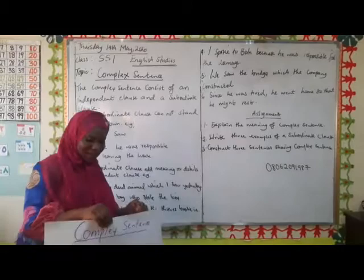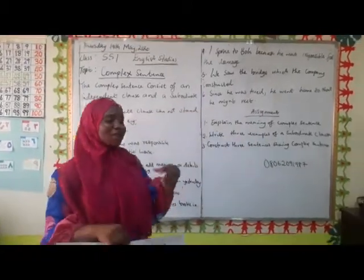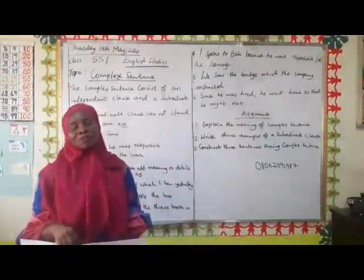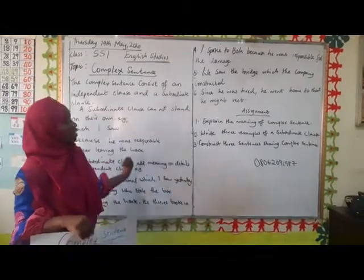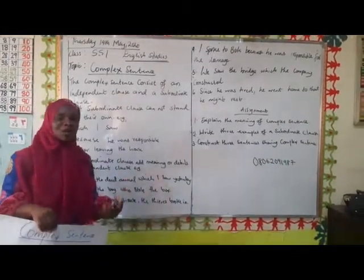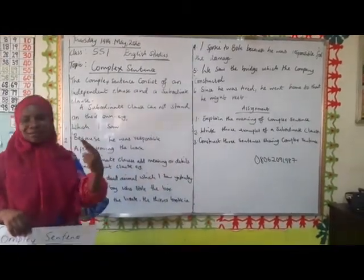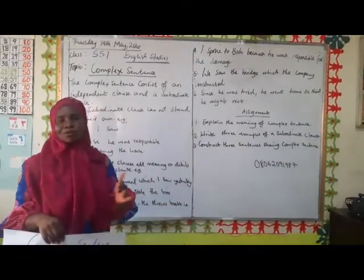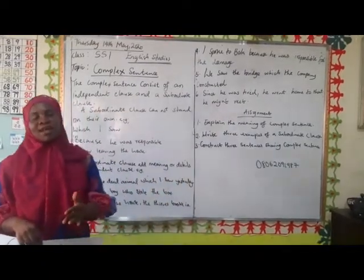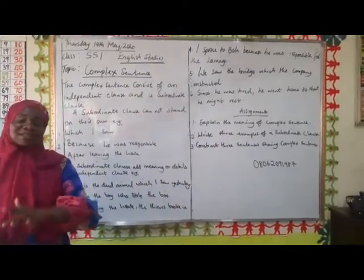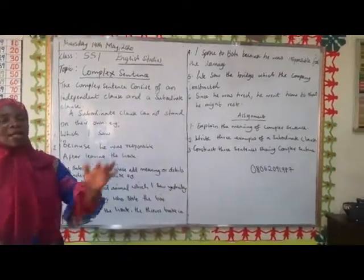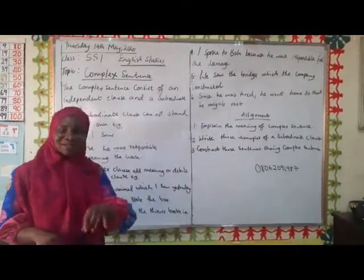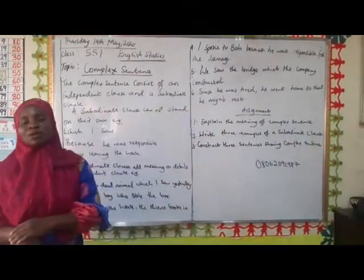The complex sentence usually poses difficulty to most English students because this type of sentence looks at two key things: the independent clause and the subordinate clause. That's to say that it's a kind of sentence that contains an independent clause and a subordinate clause.